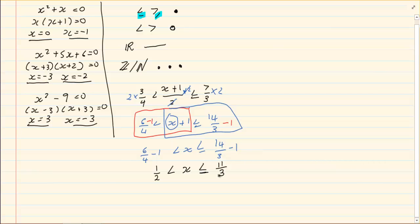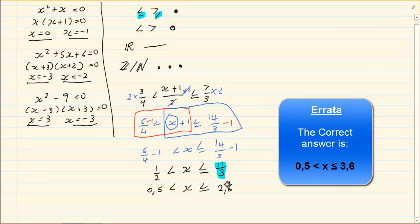Now when you are doing a number line it is difficult to draw 11 over 3. It is easier to get it in a decimal form. So we would have x is greater than 0 comma 5 but it is smaller and equal to 2 comma 6 recurring. It is easier to see 2 comma 6 on a number line because you now know it is after 2 but it is before 3.